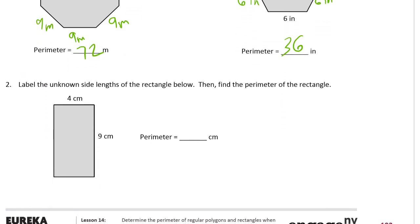Then label the unknown side lengths of this rectangle below and find the perimeter of the rectangle. So we know opposite sides are equal so if this side here is 4 then this side here also has to be 4 centimeters. All parallelograms are like that and all rectangles are parallelograms.